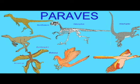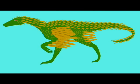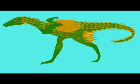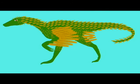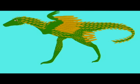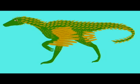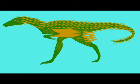Also of this group are the first birds, such as Archaeopteryx, and their latest descendants. So this group did not entirely become extinct — one lineage, that which would lead to modern birds, survived the mass extinction 65 million years ago.